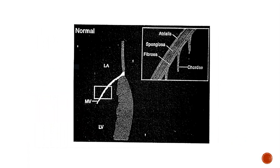This is a diagram of the normal mitral leaflet. It has an atrialis portion — thin and smooth — facing towards the atrium, and a fibrosa portion facing towards the ventricle which is thick with attachment to chordae. In between there is a spongiosa layer. In mitral valve prolapse, there is proliferation of the spongiosa layer, which further progresses and causes prolapse of the mitral leaflet. As the disease progresses, there may be fibrotic deposition over the atrialis side, causing progression of MR.